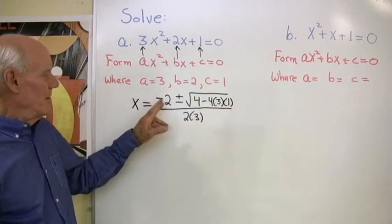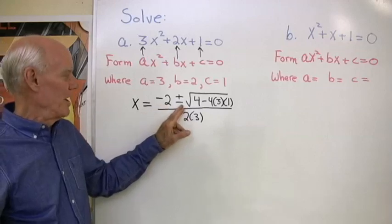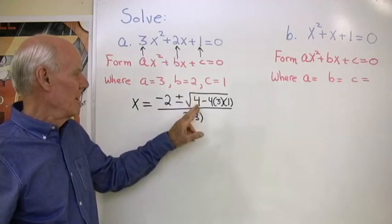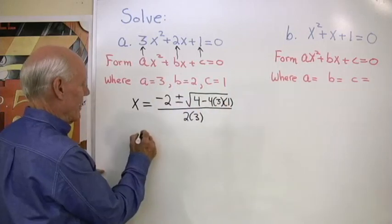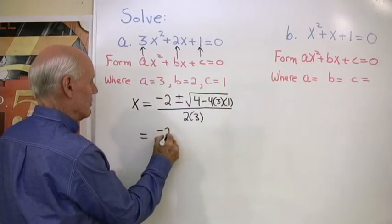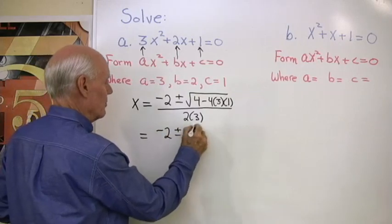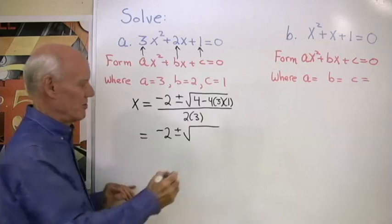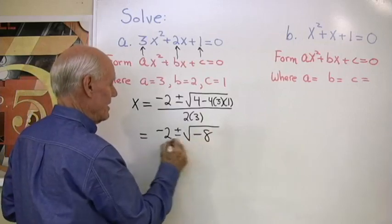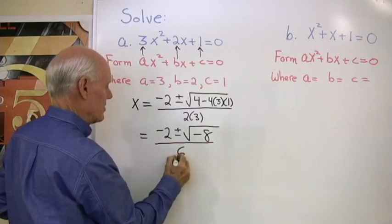So, negative B plus or minus the square root of B squared minus 4 times A times C. So I'll simplify that. Negative 2 plus or minus square root of 4 subtract 12. So that should be negative 8, all divided by 6.